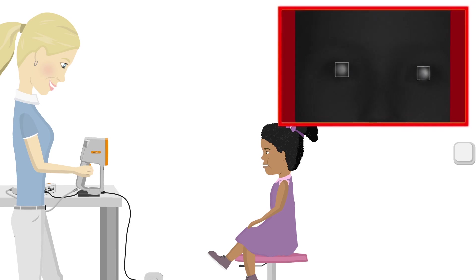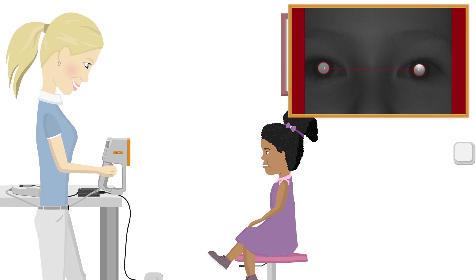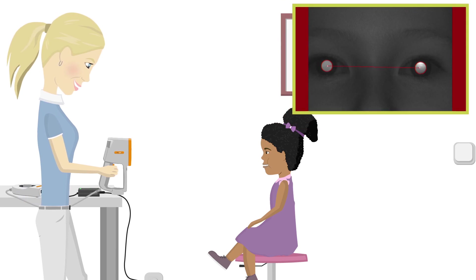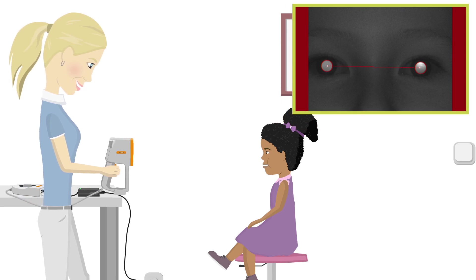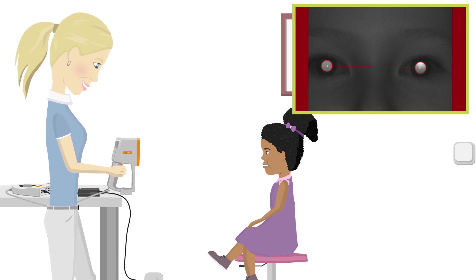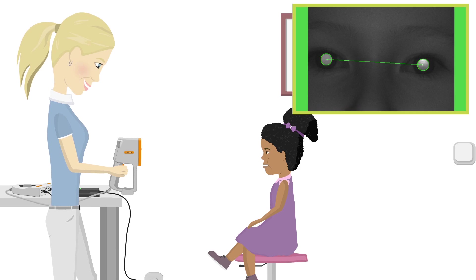As Anna moves forward, the squares will turn to red circles and the picture is in clear focus. Anna needs to continue in that direction until the red circles and the left and right side of the screen begin to turn green.